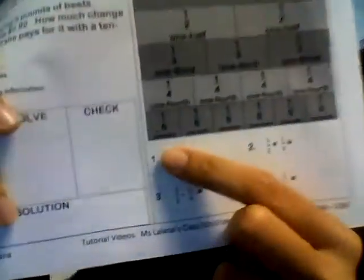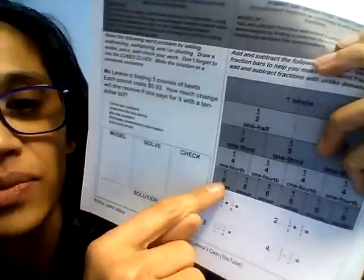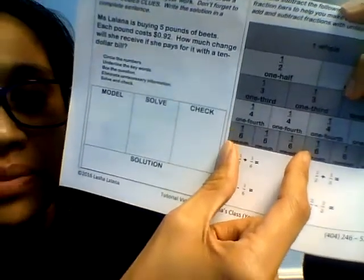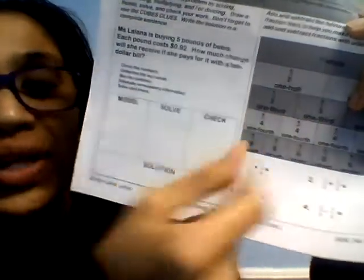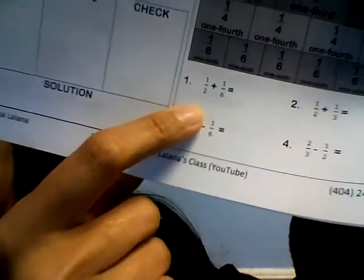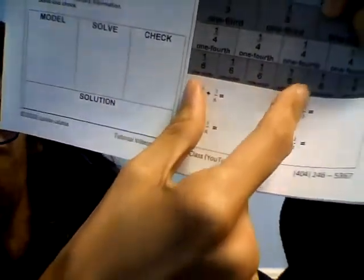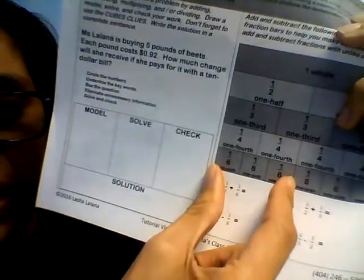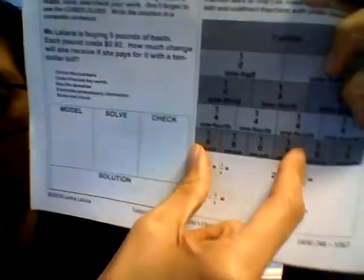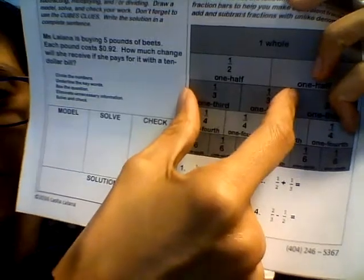Look at the first one: one half plus one sixth. Do you see one half right there and one sixth right there? Now, which one do we change? We need to convert that one half into an equivalent fraction. One half — look — one half is the same thing as three sixths. So right here under one half, you can write three sixths. Three sixths plus one sixth is four sixths. So one half is the same thing as three sixths, and three sixths plus one sixth is four sixths, which is equal to two thirds.